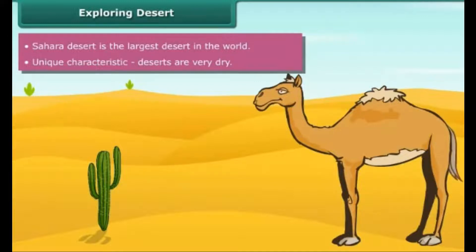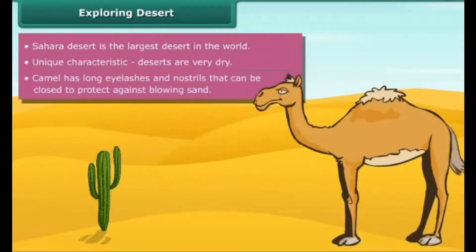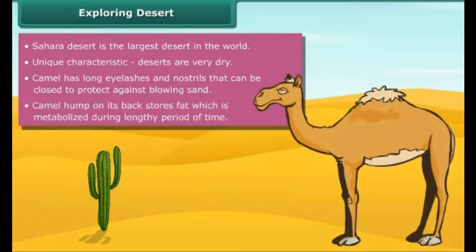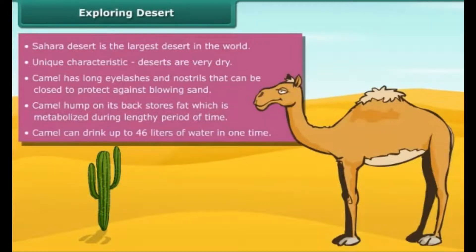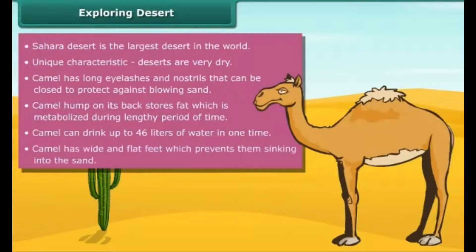Camel has many adaptations that are specifically suited to desert habitat. Camel has long eyelashes and nostrils that close to protect against blowing sand. A large hump on its back stores fat, which is metabolized during lengthy periods. They can drink up to 46 liters of water at one time and can live without water for a week. Wide and flat feet prevent the camel from sinking into the sand.